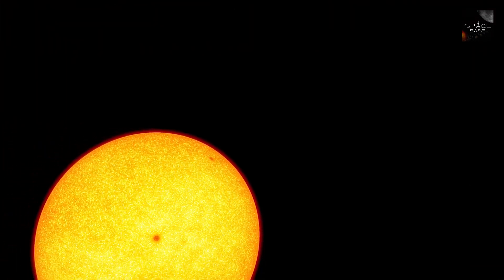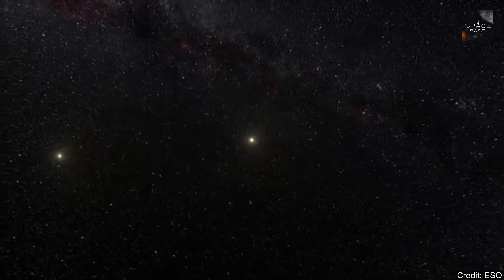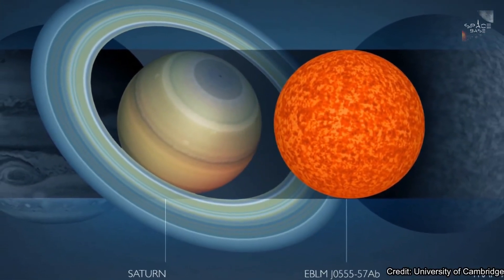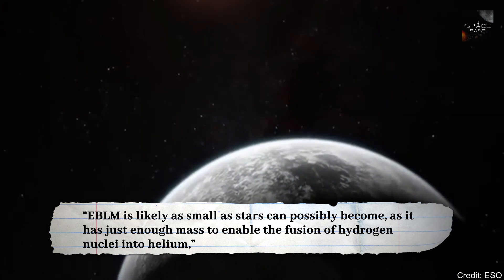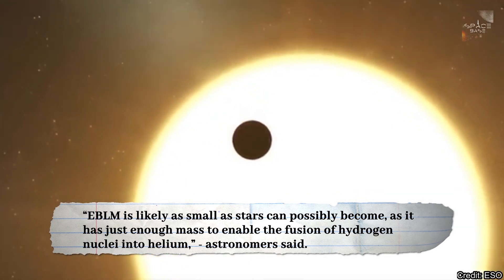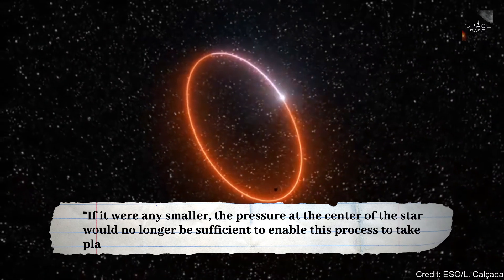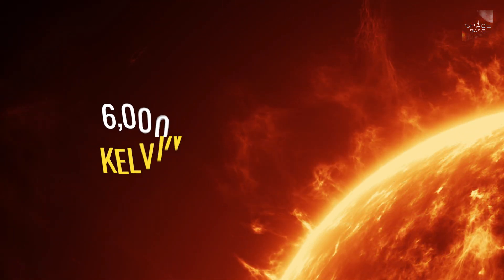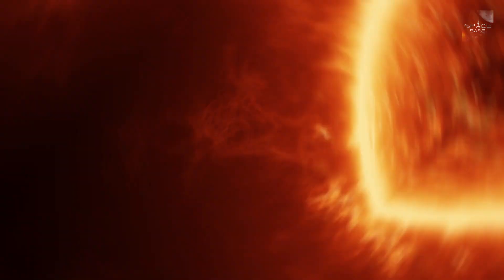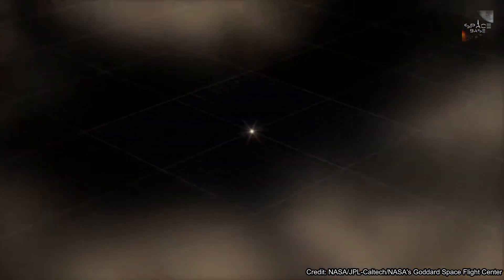Assuming we would survive the trip, this dwarf beast would rip us apart instantly with its gravitational pull 300 times that of the Earth, meaning that the average male would weigh 22.5 tons on its surface. EB is only a tiny bit bigger than the gas giant Saturn, but it weighs 85 Jupiter masses. EBLM is likely as small as stars can possibly become, as it has just enough mass to enable fusion of hydrogen nuclei into helium, astronomers said. If it were any smaller, the pressure at the centre of the star would no longer be sufficient to enable this process to take place. With a maximum surface temperature between 6,000 and 7,500 Kelvin, this tiny celestial body is hotter than the Sun. Of course, it's no surprise, as the smaller a star is, the hotter it gets.